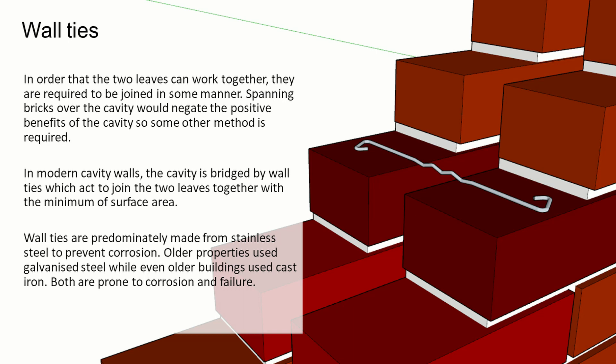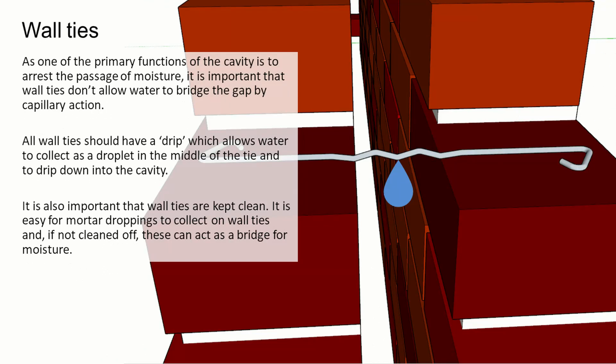In modern cavity walls the cavity is bridged by wall ties, which join the two leaves together with the minimum surface area. Wall ties are predominantly made from stainless steel to prevent corrosion, though older properties might have used galvanized steel, and even older properties would have used cast iron — but both of those are prone to corrosion and failure. As one of the primary functions of the cavity is to arrest the passage of moisture, it is important that the wall ties don't allow water to bridge the gap. All wall ties should have a drip which allows water to collect as a droplet in the middle of the tie and drip down into the cavity below. It's also important that wall ties are kept clean, as mortar droppings can collect on wall ties and act as a bridge for moisture.